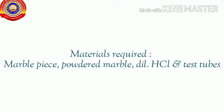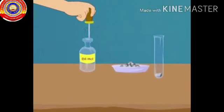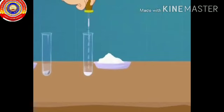Let's start the experiment. Take two test tubes. Put a marble piece in one and powdered marble of equal mass in another one. Add equal quantity of dilute hydrochloric acid in both test tubes.